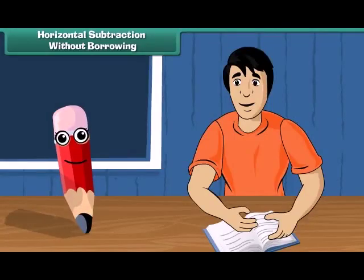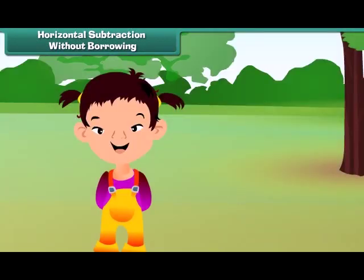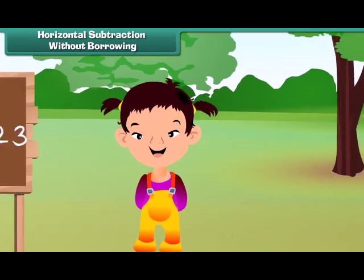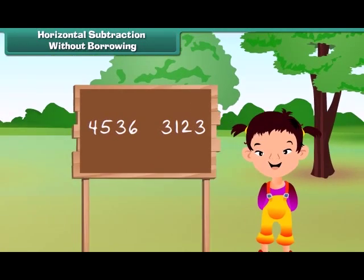Let us now move on to subtraction. Wendy went on a picnic last Saturday. The picnic spot had 2 boards with 2 different numbers written. Let us look at the numbers: 4536 and 3123.